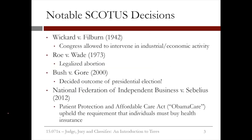There have been many significant and groundbreaking decisions made by the Supreme Court. In 1942, the Supreme Court decided on the Wickard versus Filburn case, which recognized the power of the federal government to regulate economic activity. Filburn was a farmer who was growing wheat for on-farm consumption. However, the US had established limits on wheat production, and Filburn was exceeding those limits, so even though the extra wheat he was producing was for his own use and he had no intention of selling it, he was forced to destroy it.